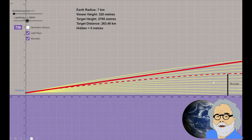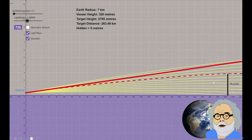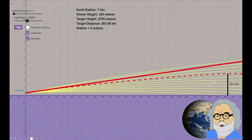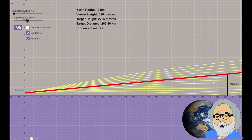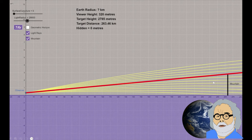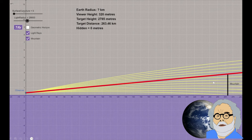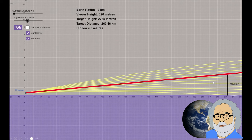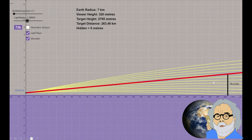This line, the tangent line to the bent light ray just above the top of the mountain at the point of the observer. And this line, the line from the observer to the top of the mountain. This line would be the line of sight for the observer when, as Witsit claims, the silhouette would not be refracted.